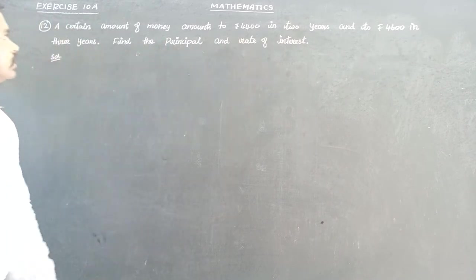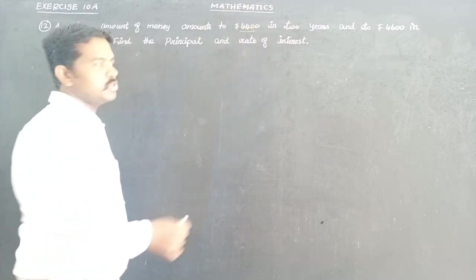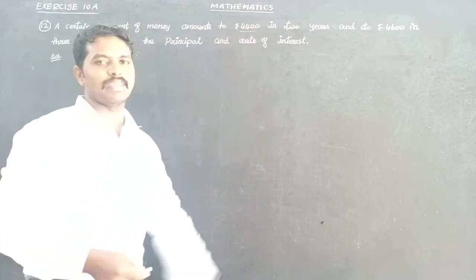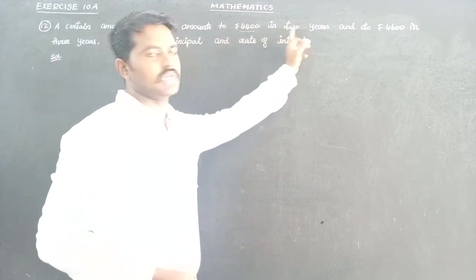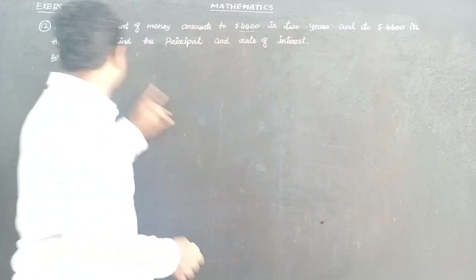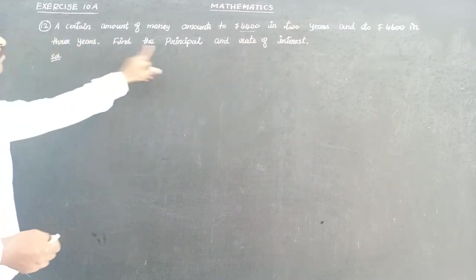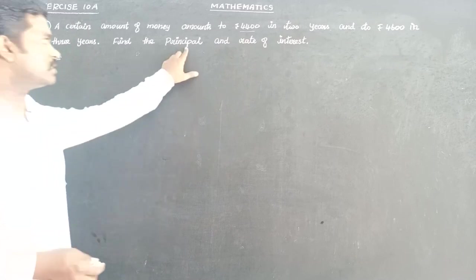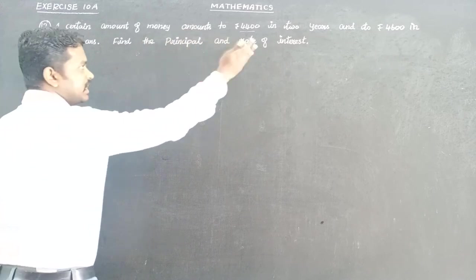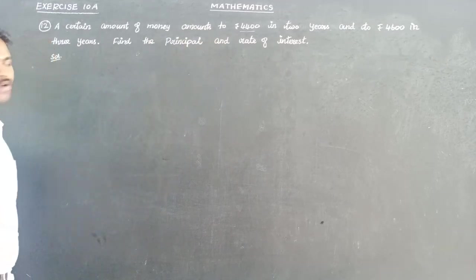So a certain amount becomes 4,400 — that is the amount after 2 years. And it becomes 4,600 in 3 years. We need to find the principal and the rate of interest.